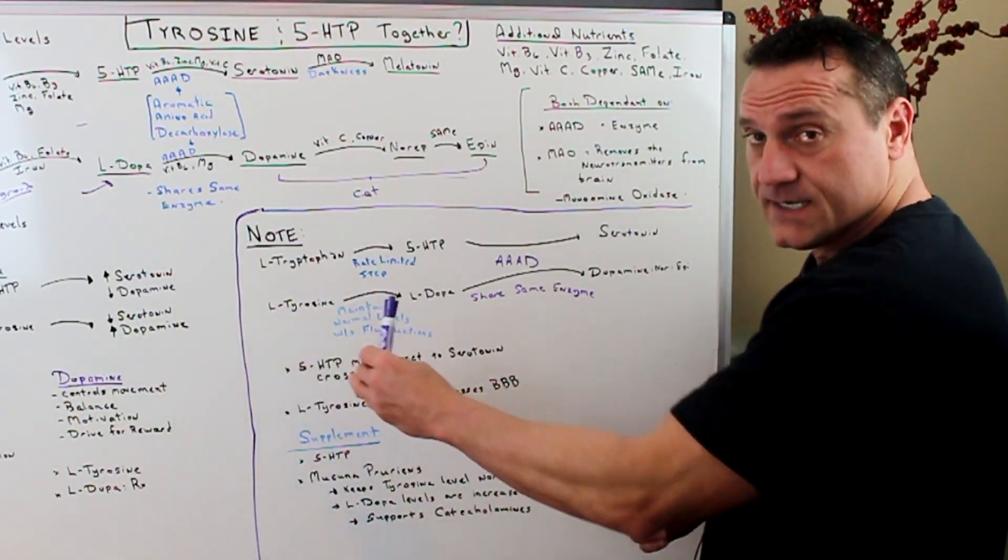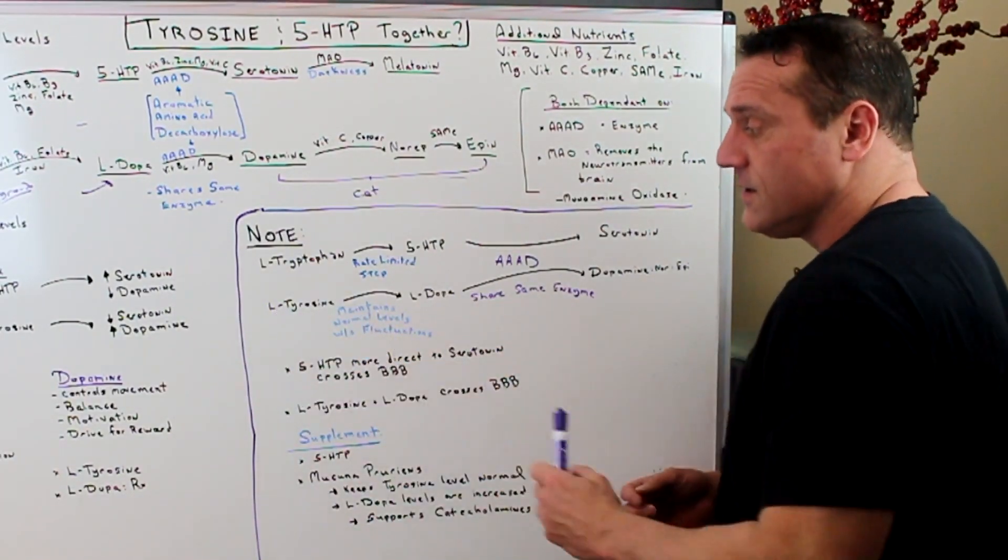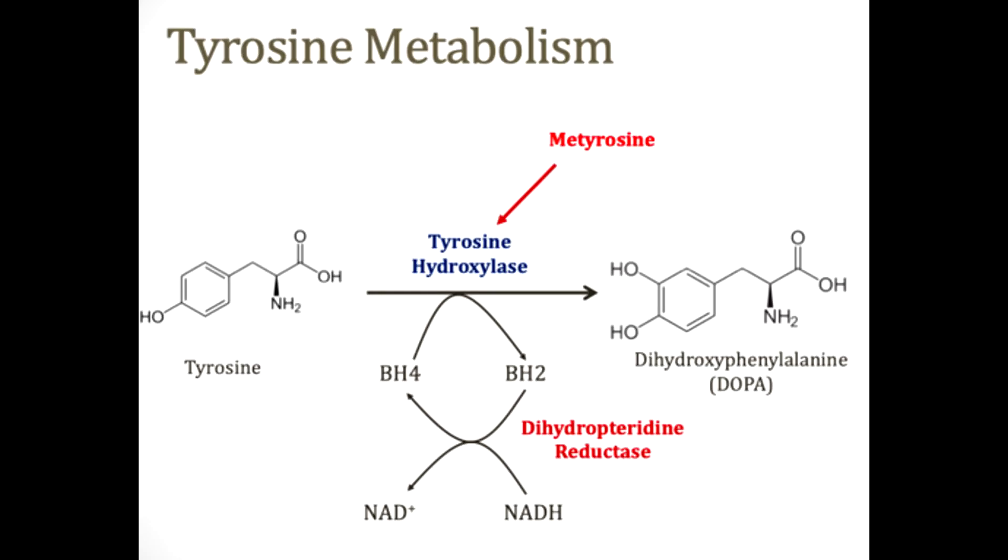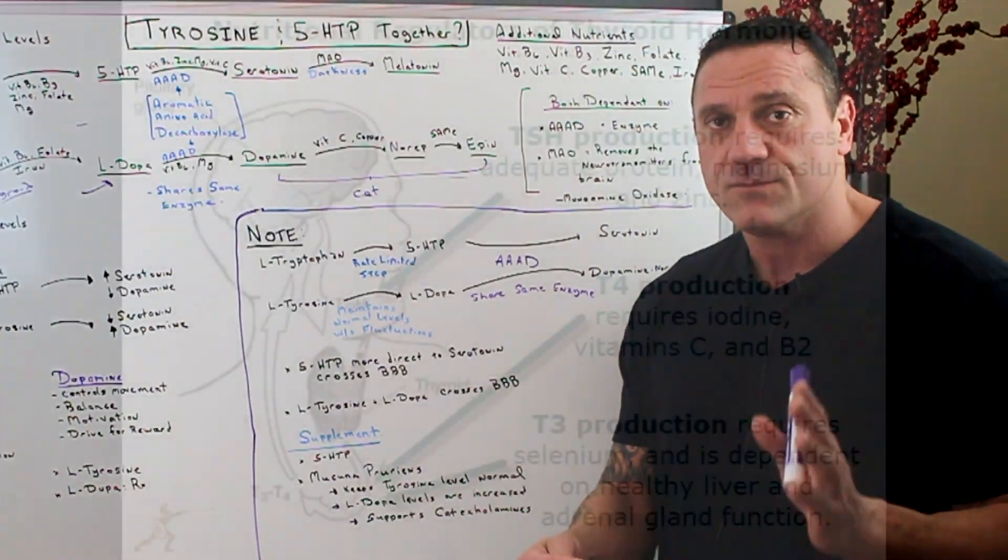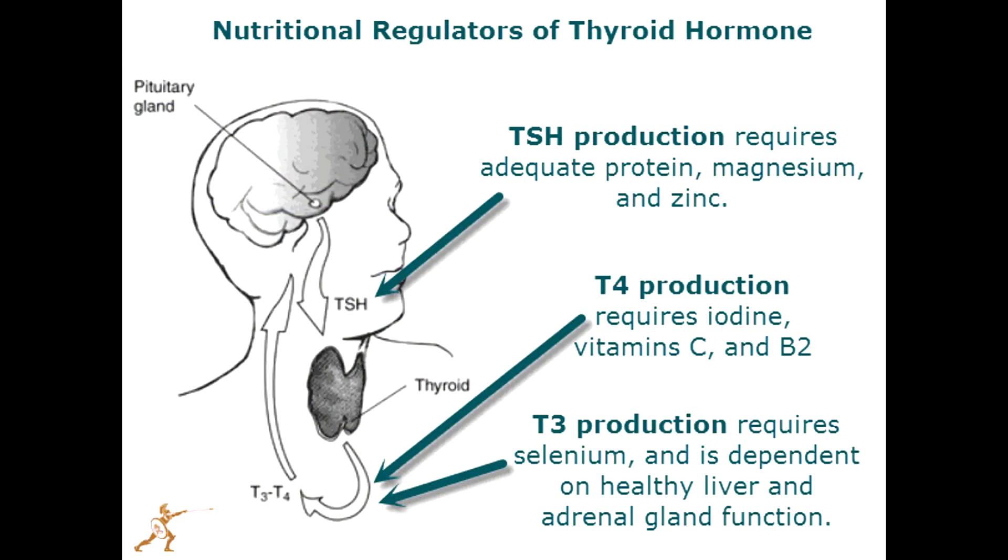So with L-tryptophan and tyrosine, tyrosine affects L-DOPA. One of the things that tyrosine does, it maintains the normal levels of L-DOPA without fluctuations of tyrosine. The problem is with L-tyrosine, L-tyrosine and iodine, they make up what? Thyroid hormone.